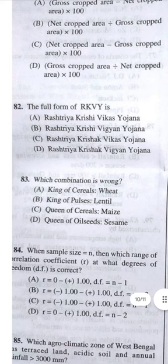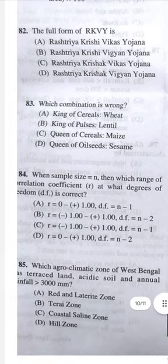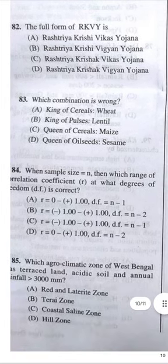Question 83: Which combination is wrong? Answer B — king of pulse is lentil, but that is wrong. King of pulse is chickpea and queen of pulse is lentil.